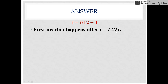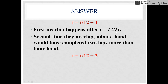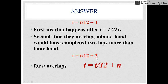That is, 12/11 hours is the first time after which the overlap occurs. For the second overlap, the minute hand would have completed 2 laps more than the hour hand. So the equation becomes T = T/12 + 2, where T is the number of laps covered by the minute hand, T/12 are the laps covered by the hour hand, and 2 represents the extra laps the minute hand covers. For n overlaps, we can generalize the equation as T = T/12 + n.